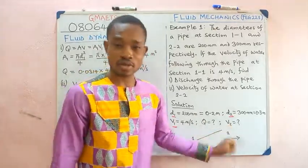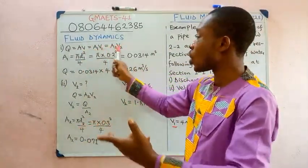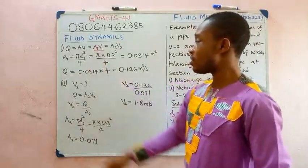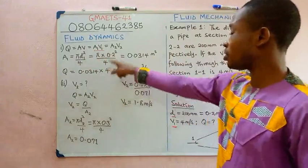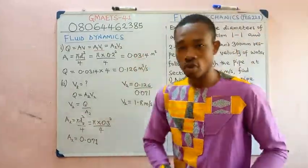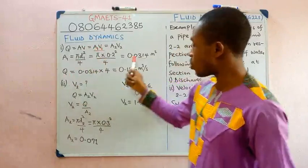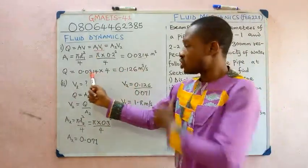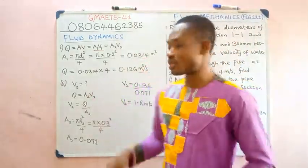We calculate area 1 using A = πd²/4. With d1 = 0.2 m: A1 = π(0.2)²/4 = 0.0314 m². Then discharge Q = A1 × V1 = 0.0314 × 4 = 0.126 m³/s. The unit is m³/s because volumetric flow rate is volume over time.